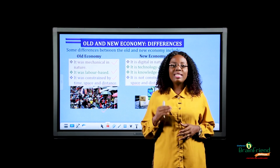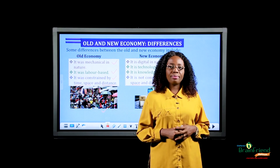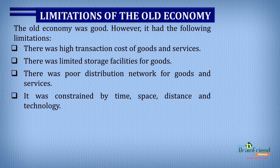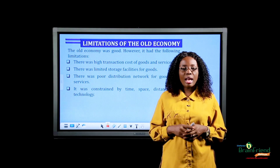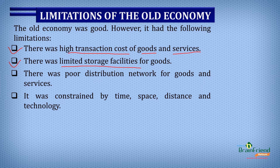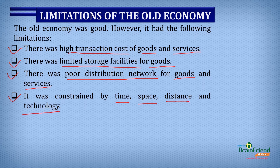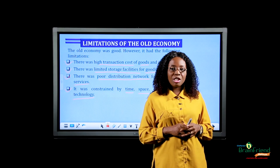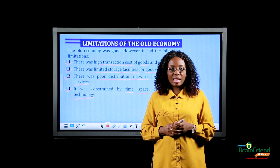Let's look at the limitations of the old economy. In the old economy, there was a high transaction cost of goods and services. There was limited storage facilities for goods. There was a poor distribution network for goods and services. And the old economy was constrained by time, space, distance, and technology. These are some of the limitations experienced when operating in the old economy.